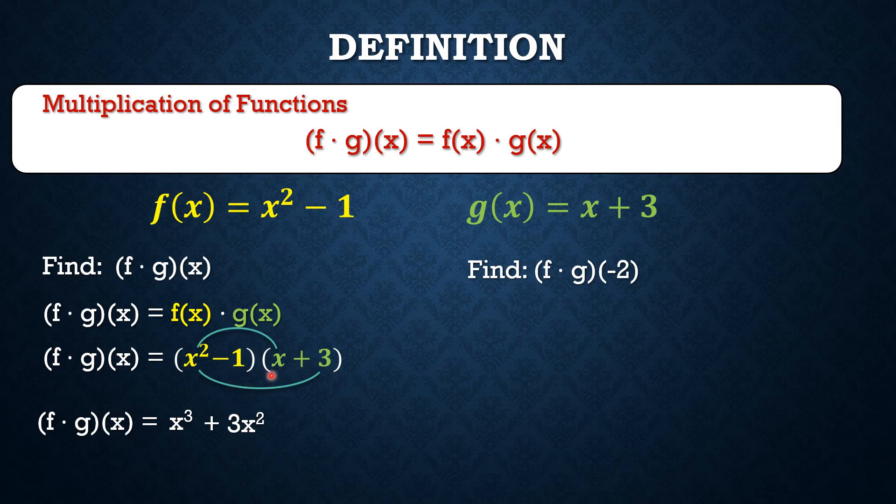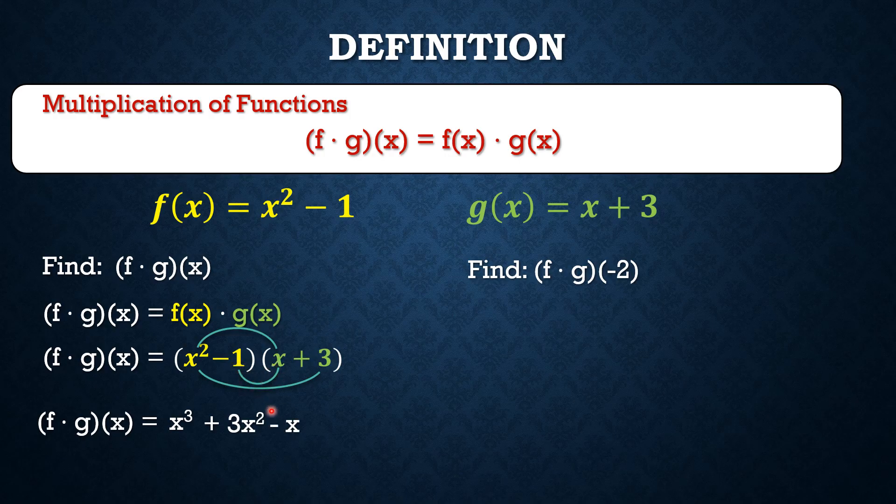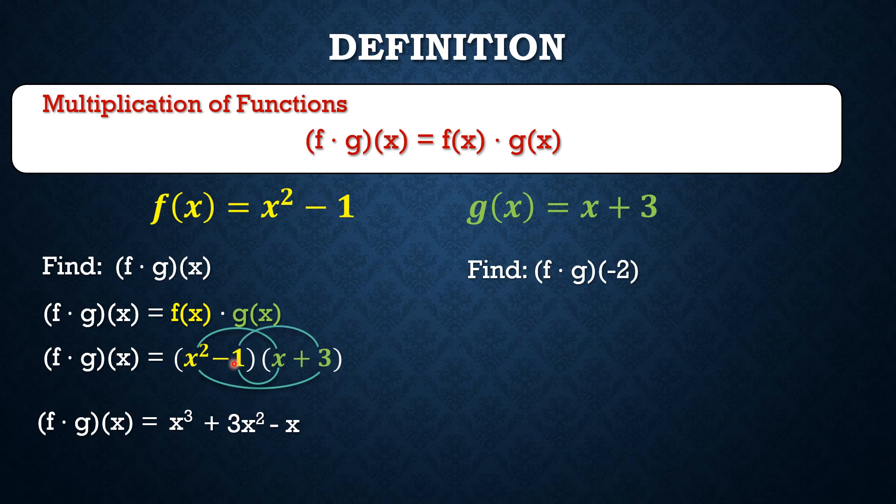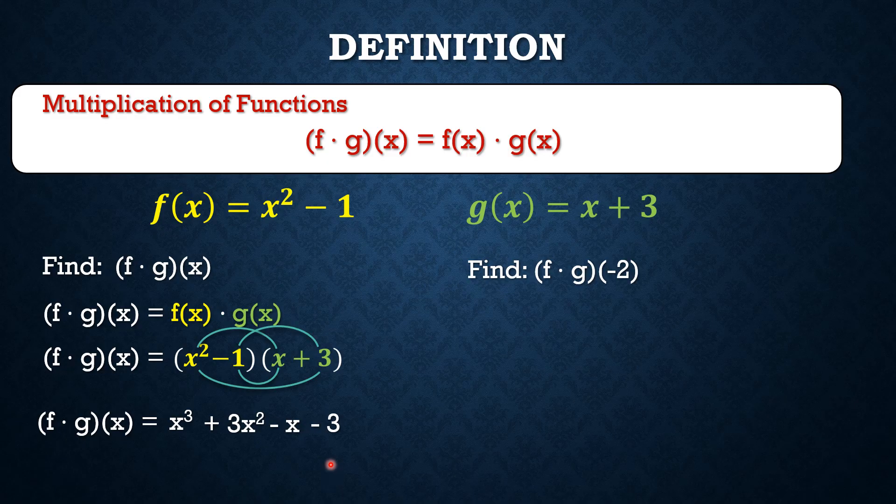Inner terms, negative 1 and x. Negative 1 times x is negative x. And then the last terms, we have negative 1 and positive 3. Negative 1 times positive 3, and that is negative 3.